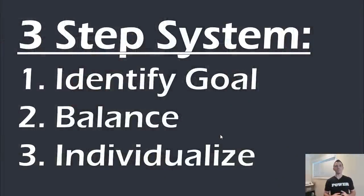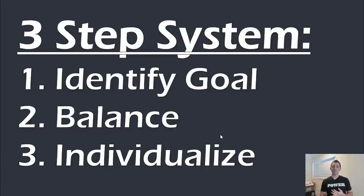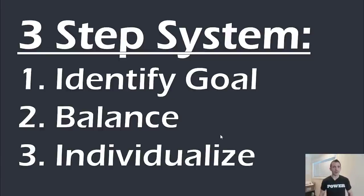To wrap up: when you finalize this whole system, the last thing I do is go through a three-step process. One: identify the goal — we've covered that today. Two: balance — so if I need to get my hamstring stronger, I can't just do hamstring work; I've got to balance that by doing some quad work, some adductor and abductor work for the joint.